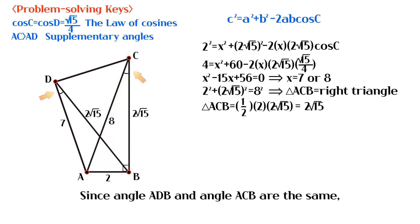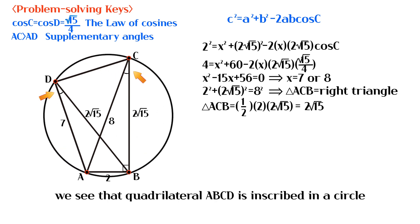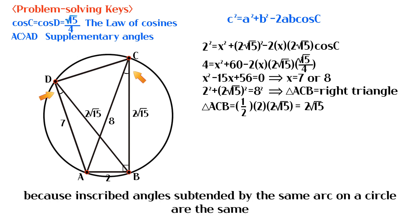Since angle ADB and angle ACB are the same, we see that quadrilateral ABCD is inscribed in a circle. Because inscribed angles subtended by the same arc on a circle are the same.